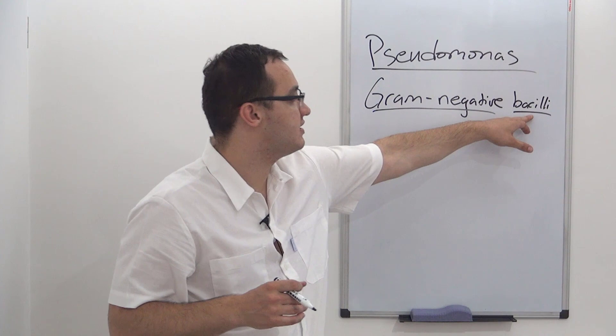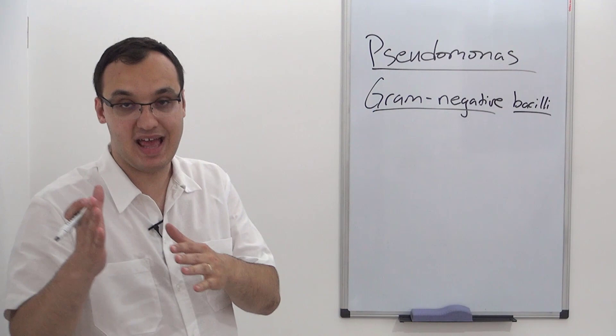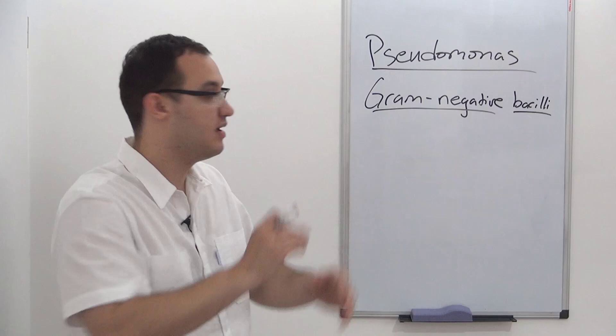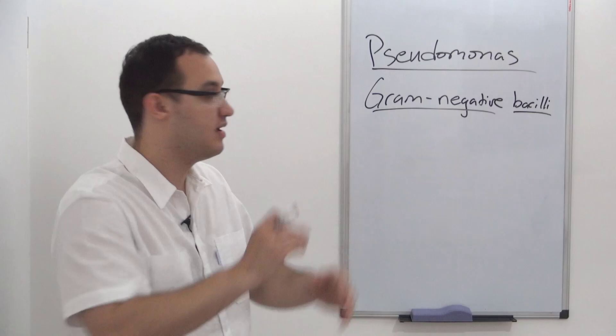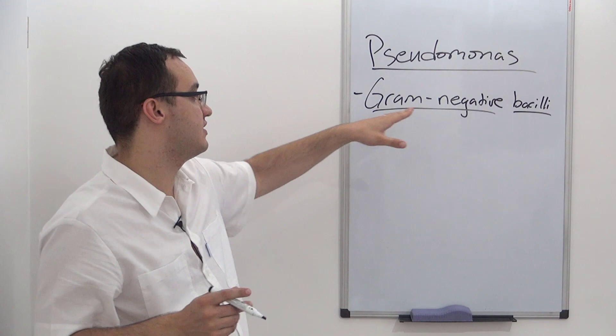You can have gram-positive or gram-negative depending on which color you have. And this is the type of bacteria. So gram-negative bacilli. For example, MRSA has gram-positive cocci in clusters. But in pseudomonas, we have gram-negative bacilli.